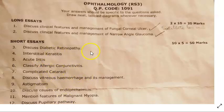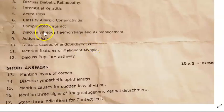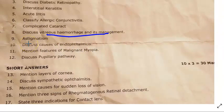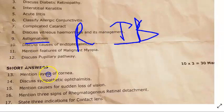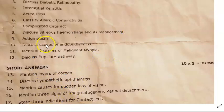Acute iritis is anterior uveitis. Allergic conjunctivitis classification: vernal keratoconjunctivitis, simple, phlyctenular. Complicated cataract caused by uveitis. Vitreous hemorrhage and its management is again a very important question. Astigmatism: classify as regular versus irregular, with-the-rule versus against-the-rule.